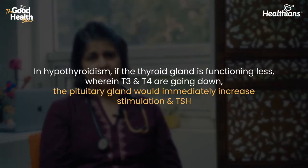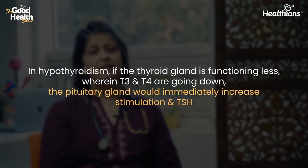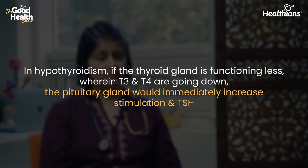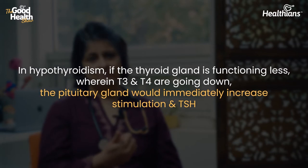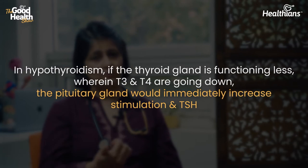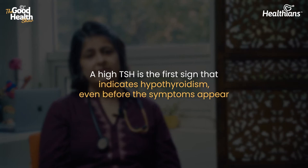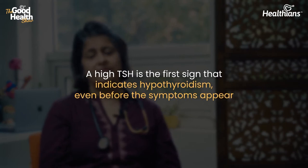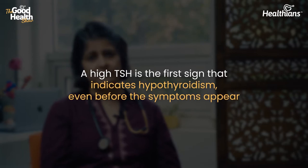In hypothyroidism, when the thyroid gland is functioning less and levels of T3 and T4 are going down, the pituitary gland immediately increases stimulation and raises TSH so the thyroid gland can function normally again. A high TSH is the first sign, and it points towards hypothyroidism even before symptoms appear. The stage where there are no symptoms, T3 and T4 are normal, and only TSH is high is called subclinical hypothyroidism.